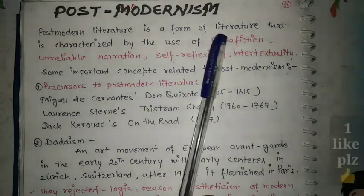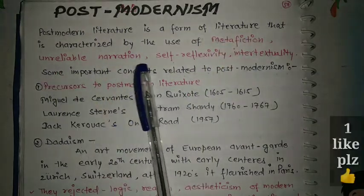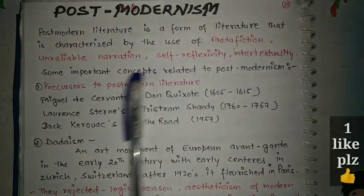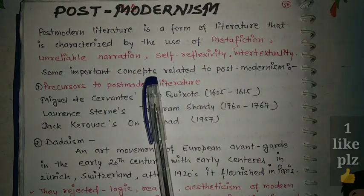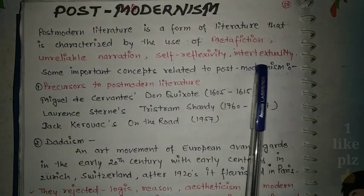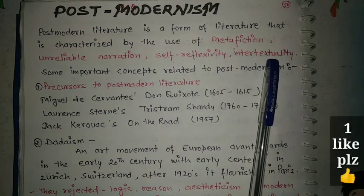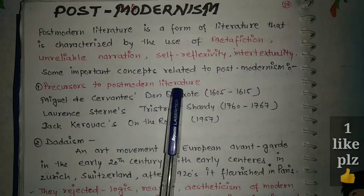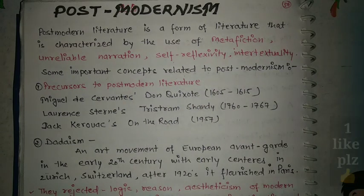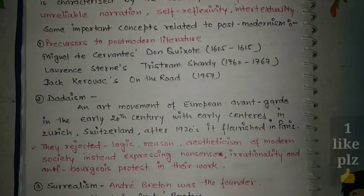Postmodern literature is a form of literature characterized by the use of metafiction, unreliable narration, self-reflexivity, and intertextuality. In the next video, we will be talking about intertextuality and some other important concepts related to postmodernism.